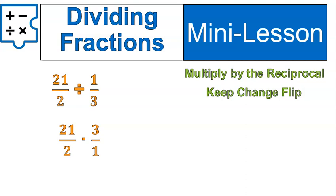Then you change the symbol from division to multiplication, and you flip the second fraction. Notice it went from 1 third to 3 over 1. So we kept the first fraction, we changed the symbol, we flipped over the second fraction. The math way of saying that is we multiply by the reciprocal. The reciprocal is just a fancy way of saying flipping the fraction upside down.